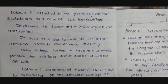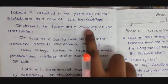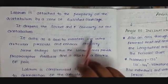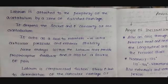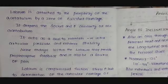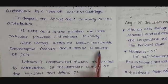The acetabular labrum is similar to the glenoid labrum of the shoulder joint, and is attached to the periphery of the acetabulum. Its functions include: deepening the socket and increasing the concavity of the acetabulum, thereby increasing the congruency of the joint; acting as a seal to maintain negative intra-articular pressure and enhance stability — the acetabular fossa provides the negative intra-articular pressure, which is kept within the articular surfaces by the acetabular labrum. The labrum also has nerve endings that provide proprioceptive feedback and can act as a source of pain.